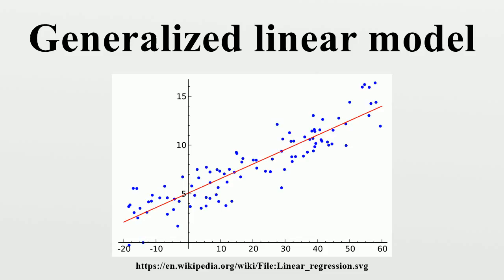For example, in cases where the response variable is expected to be always positive and varying over a wide range, constant input changes lead to geometrically varying, rather than constantly varying, output changes. A prediction model might predict that a 10-degree temperature decrease would lead to 1,000 fewer people visiting the beach — this is unlikely to generalize well over both small beaches and large beaches. A beach whose expected attendance was 50 at a higher temperature would now be predicted to have the impossible attendance value of minus 950.